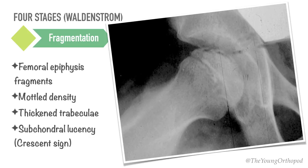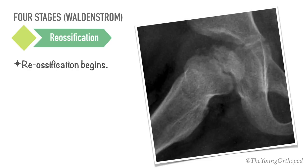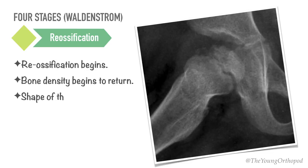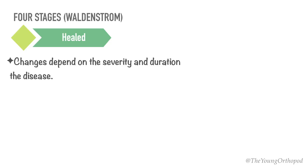The third radiographic stage is the reparative or re-ossification phase. Radiologically, normal bone density returns. Alterations in the shape of the femoral head and neck become apparent, and changes depend on the severity and duration of the disease. The femoral head may be nearly normal, or may demonstrate flattening of the articular surface with widening of the head and neck of the femur.